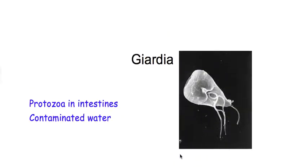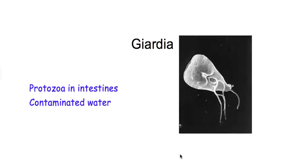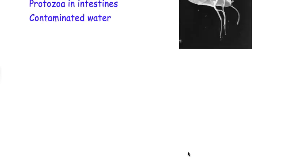Giardia: for those who have done camping or backpacking, you always hear to be careful and boil or filter the water first. That's because it may contain a protista called Giardia. This organism lives in our intestines and is hard to get rid of, causing terrible diarrhea and stomach cramps.